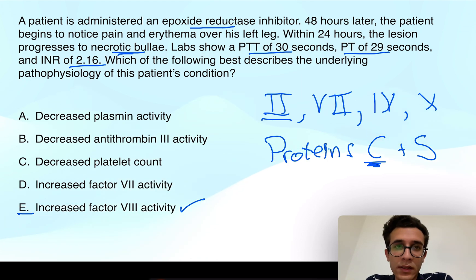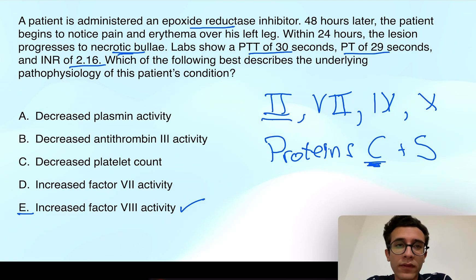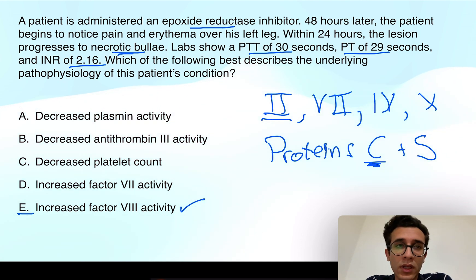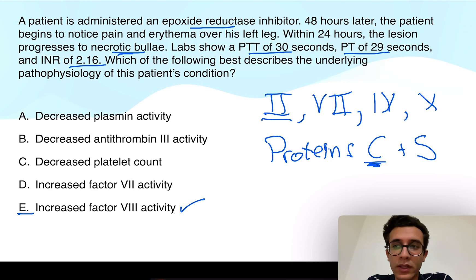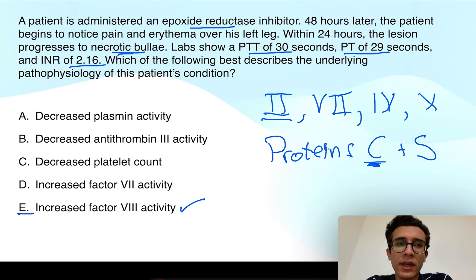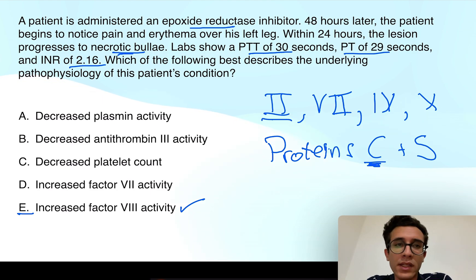This is a tough question, but if you think carefully and follow the correct sequence of events, you can reach the correct answer. The first thing we saw was inhibition of epoxide reductase — ask yourself what its function is. It activates vitamin K. What does activated vitamin K do? It activates procoagulant factors and anticoagulants. Then ask: how did this lead to skin necrosis or a hypercoagulable state? Think about the half-lives of the coagulation factors, protein C and S.